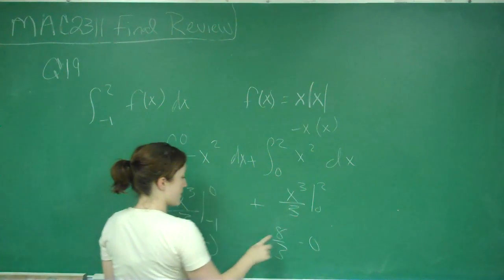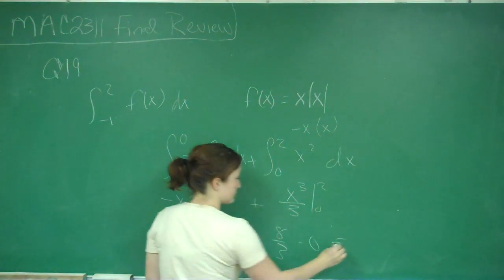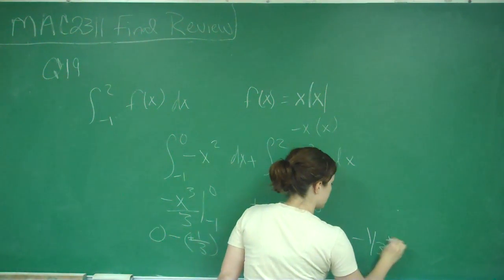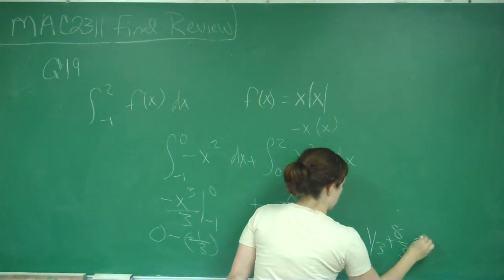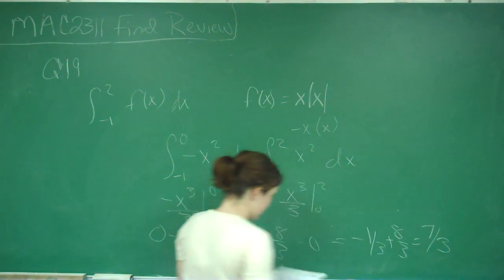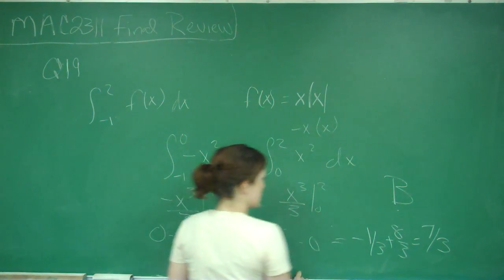So I get negative 1 third plus 8 thirds. This is equal to 7 thirds. And that is answer B.